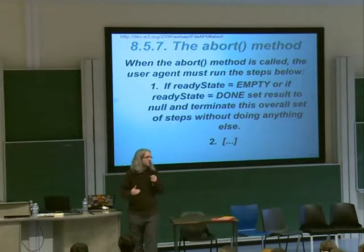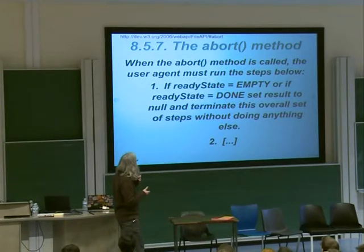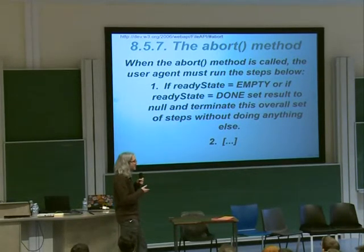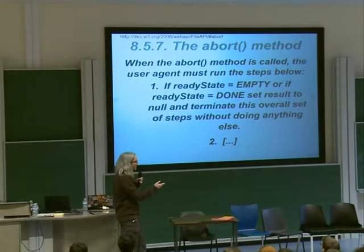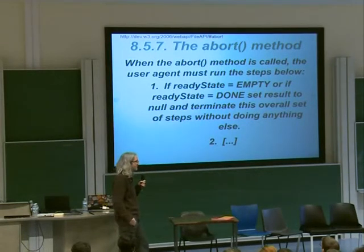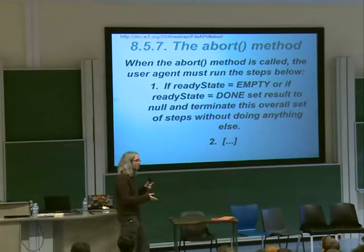So we find the right version of the spec and the bit about the abort method. It says: when the abort method is called, if readyState equals EMPTY or readyState equals DONE, set result to null and terminate this overall set of steps. It turns out readyState is set to EMPTY when the FileReader is first created, and we haven't done anything to change readyState yet. So the first step applies — set result to null and terminate. That tells us we don't have to throw an error, so clearly what Firefox is doing is wrong.